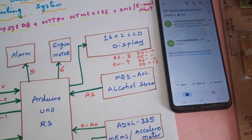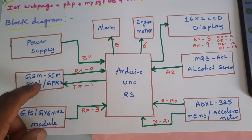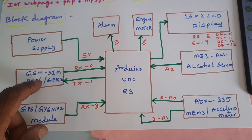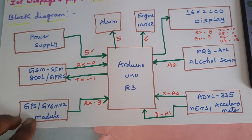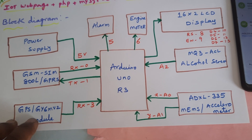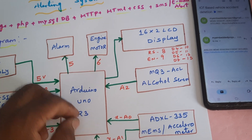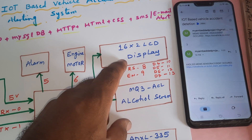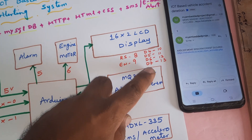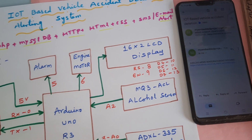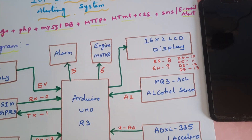For power supply, we use a GSM SIM800L with RX/TX connected to pins 0 and 1. The GPS module is GY6MV2, connected to the Arduino Uno R3 board. The 16x2 LCD display uses RS, EN, D4, D5, D6, D7 on pins 8 through 13. The alarm is connected to pin 5 and the engine to pin 6.